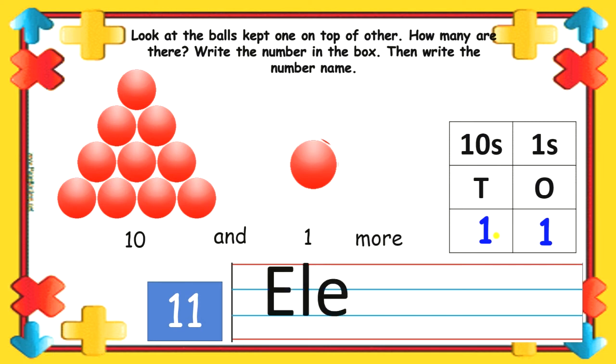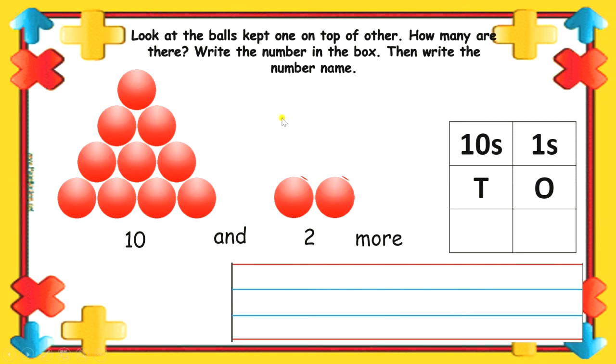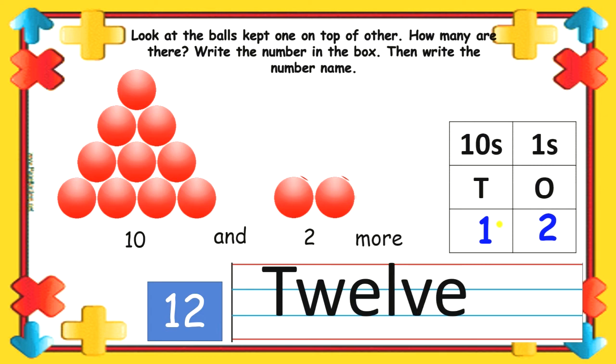Next 10 and 2 more which becomes 12. So, we write 2 at 1's place and 1 at 10's place. 1 and 2 becomes 12. And the number name for 12 is T-W-E-L-V-E.